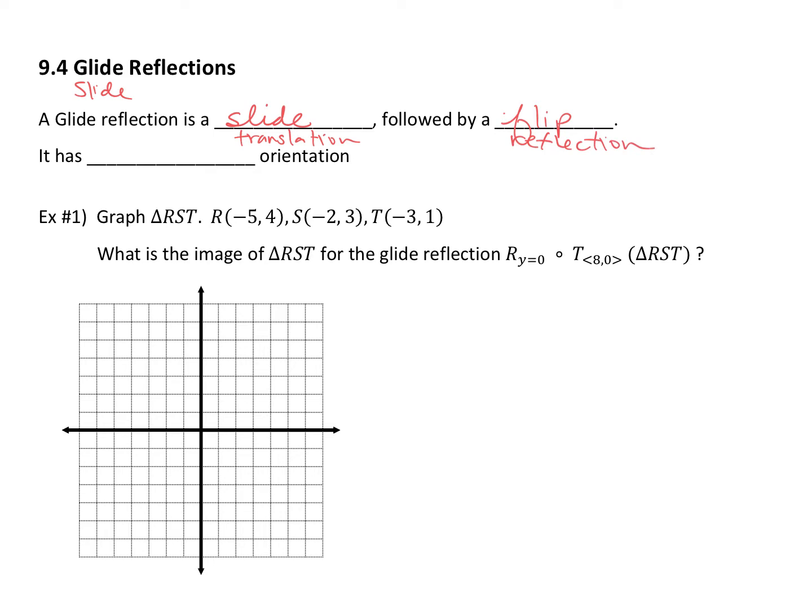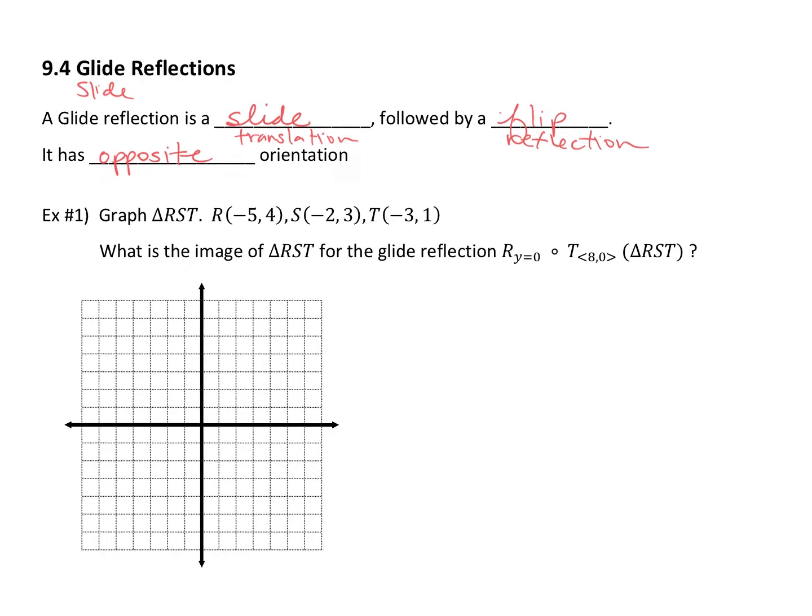Does it have same or opposite orientation? If it slides and then flips, opposite. Anything that flips, as long as it doesn't flip twice, is going to have opposite orientation. We'll do a little recap of what has what kind of orientation in a little bit, but we're just going to do two glide reflections and then we're done. Yeah, that's the whole lesson.